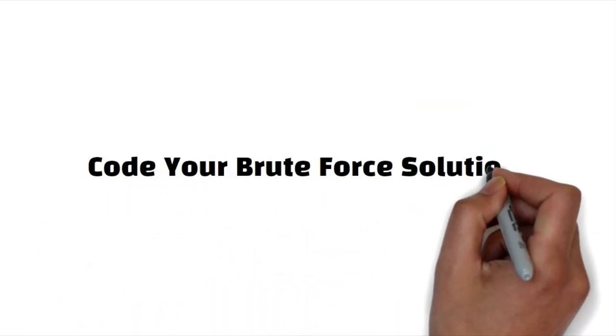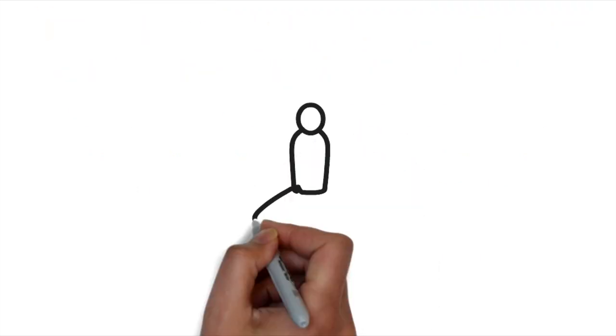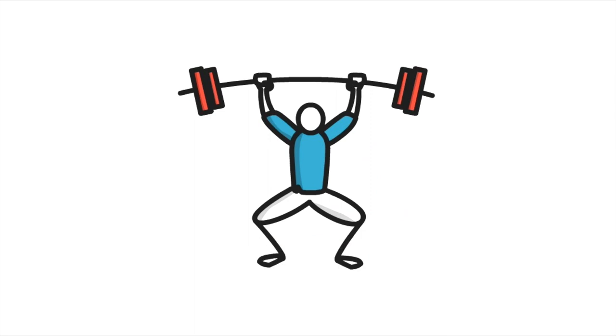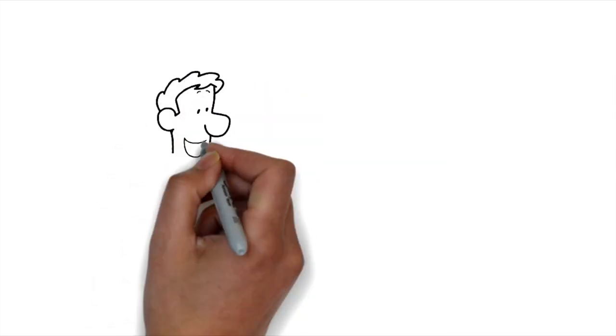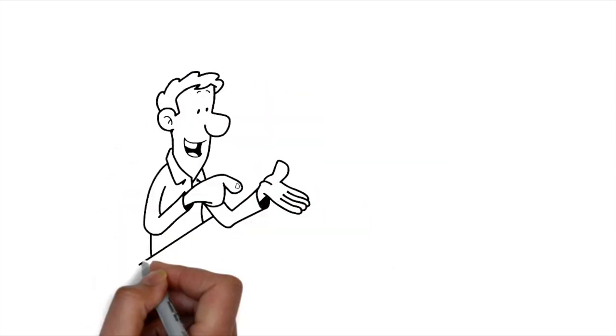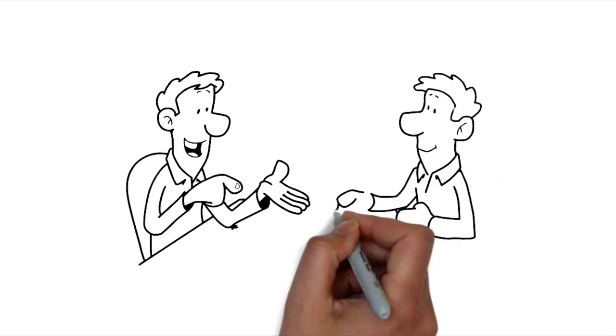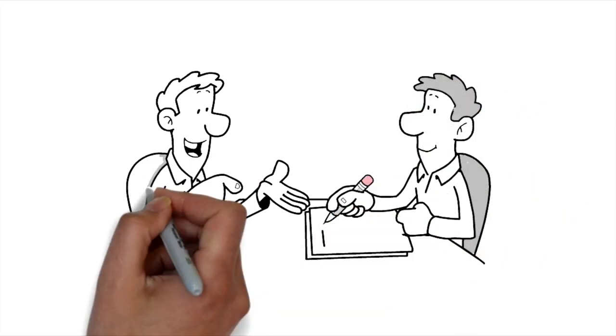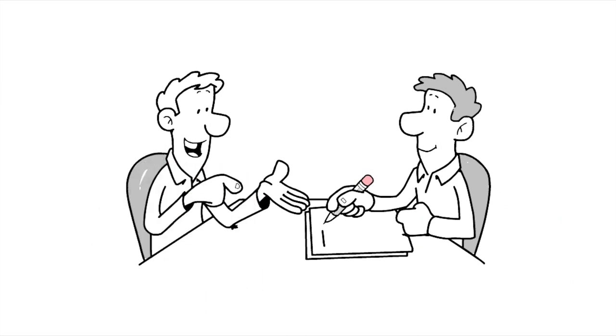Step five, code your brute force solution first. Now, some of you may be confused. All that brute force means is the most simple way that you can think of to get to your solution. Here, you're not thinking about how bad your time complexity is or how repetitive your solution looks. All we want in this step is the correct answer to the problem. Then we can worry about optimizing our solution.